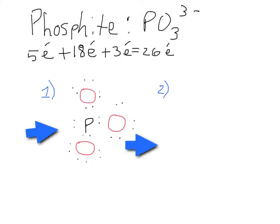Now here is just a skeleton of the Lewis dot structure. We have a total of 26 around phosphite, and following the octet rule, we need 8 around the oxygens and we need 8 around the phosphorus as well, so that they all are happy.